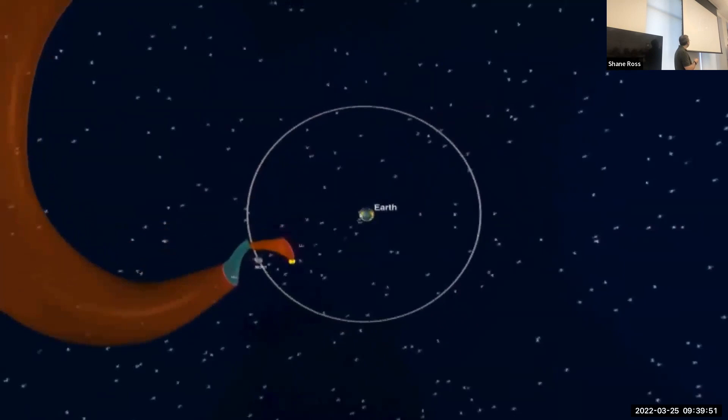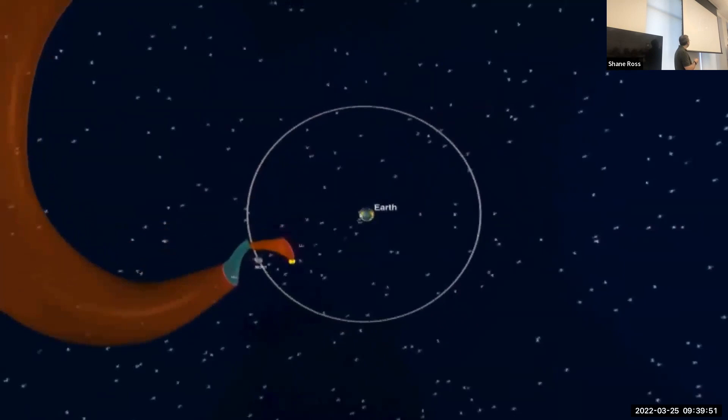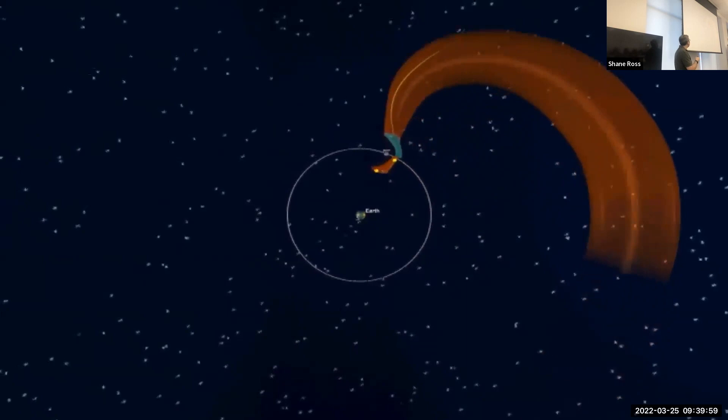Well, you would do some kind of Delta V that takes you off of the Lunar L1 orbit to leave that space station. So maybe this is sort of a smaller craft, and then it goes from tube to tube.